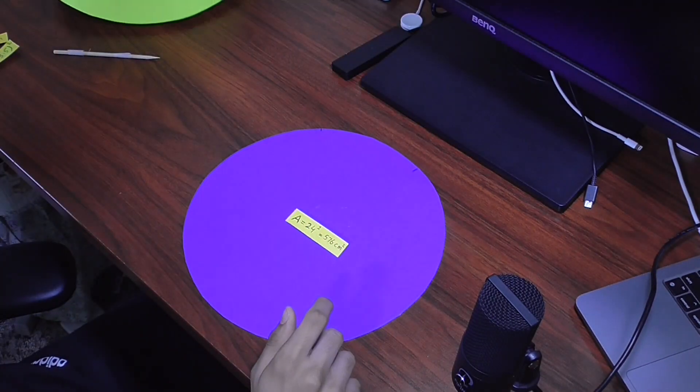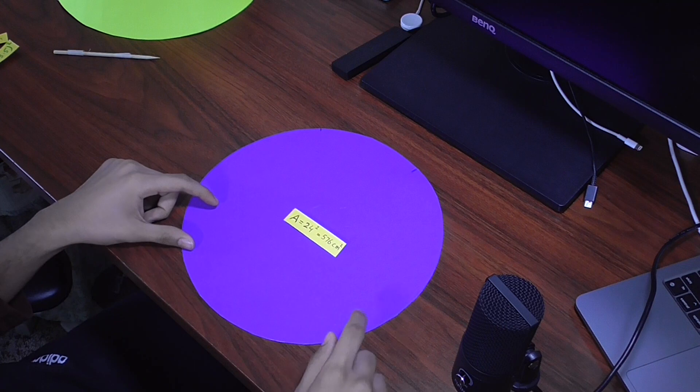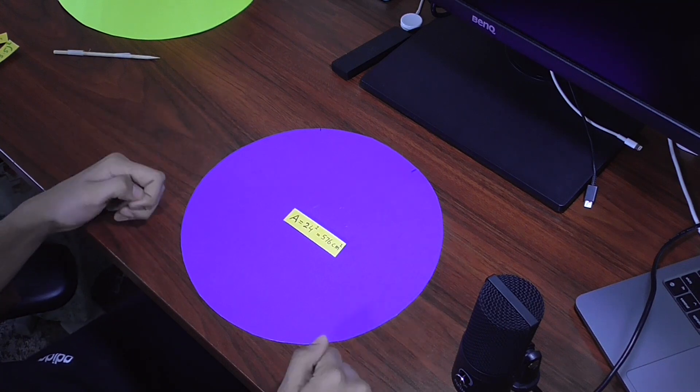So remember when we were doing the 2D measurements and the radius of the circle was approximately 13.5 centimeters?